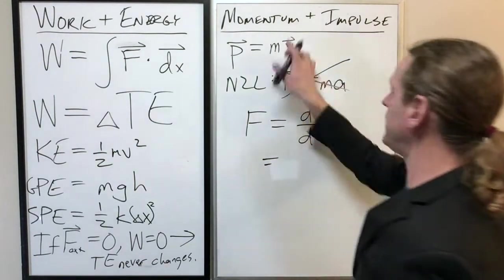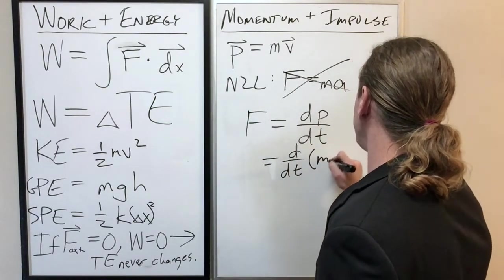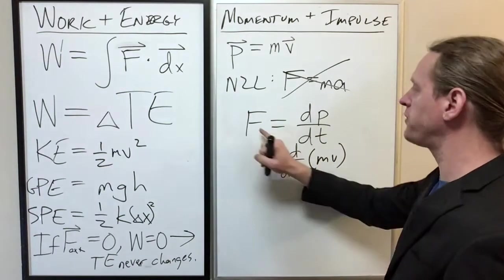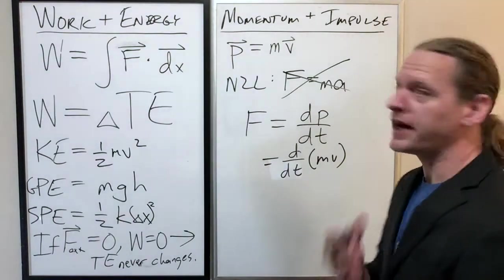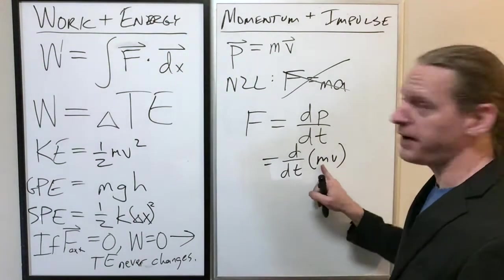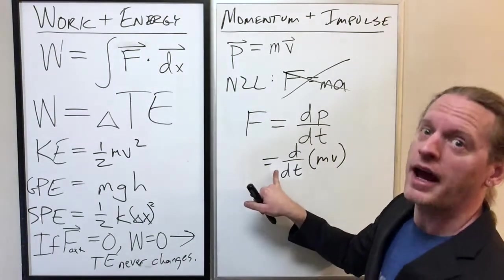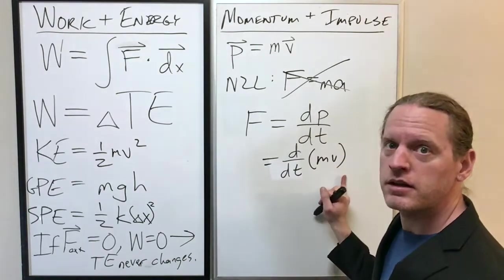If we replace this with the definition of momentum, this becomes dv/dt of mv. Now what assumption do we make that allows us to say F equals MA? That assumption is if m is constant. If m is constant, you can pull that out, and then this becomes m times dv/dt, which is MA.